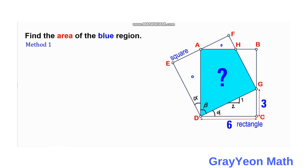If we consider triangle AED, this is a right triangle and this angle is the complement of alpha, which is beta. Since EF is a straight line, 180 minus 90 is 90, then minus this beta at angle A, so this should be a complementary angle alpha. Since triangle AFH is a right triangle, this angle here should be beta — the complement — because it is a right triangle.